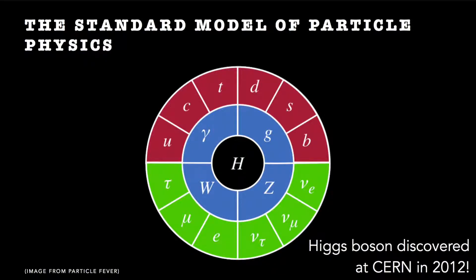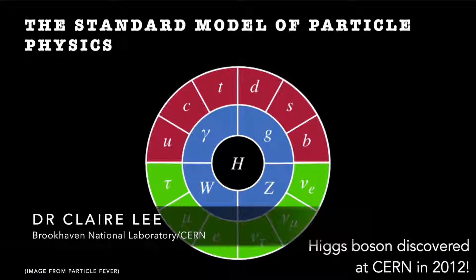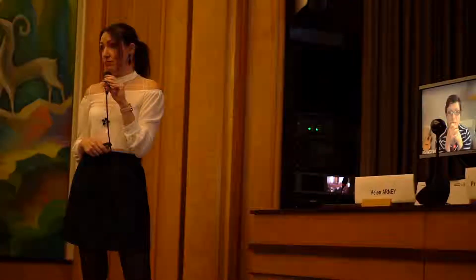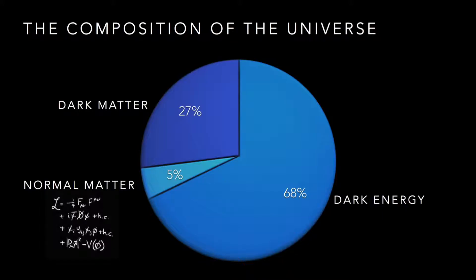In particle physics, this is our periodic table. This is all the different particles that make up everything in the universe. There's 95% of the universe that we don't know about. What are the other pieces? And that's what we're trying to figure out now.